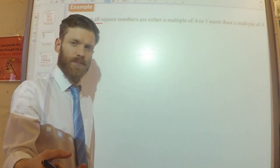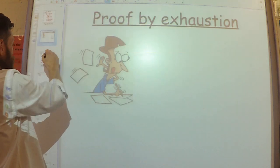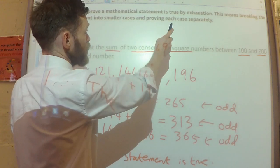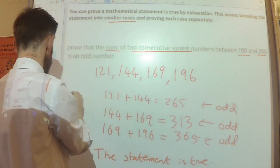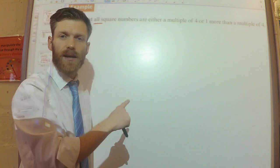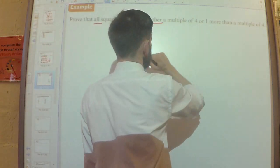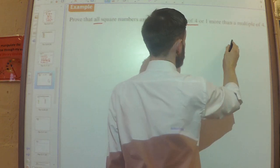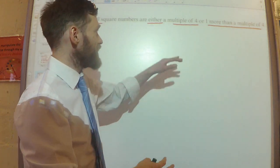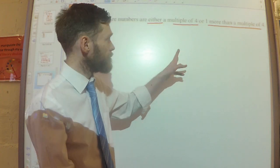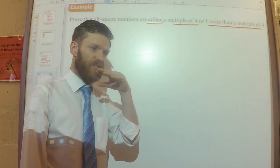So, how could this be a proof by exhaustion question? Well, remember what I said. I said that proof by exhaustion is about breaking the statement into smaller cases. And there is actually a clue that that's what you're going to do in this question because notice it says either a multiple of four or one more than a multiple of four. So, it's kind of showing there's going to be two cases here.